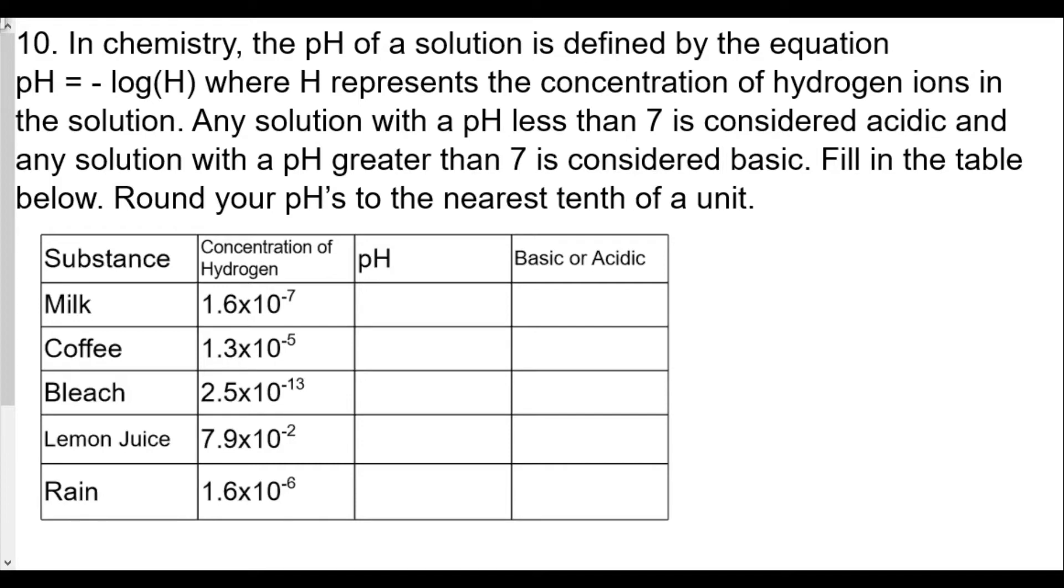Number 10: In chemistry, the pH of a solution is defined by the equation pH = -log(H) where H represents the concentration of hydrogen ions in the solution. A solution with a pH less than 7 is considered acidic, and a solution with a pH greater than 7 is considered basic. So fill in the table below. Round your pH's to the nearest tenth of a unit. We're going to take these values and plug them into our calculator to find out the pH values, and then we'll record them and determine if basic or acidic.